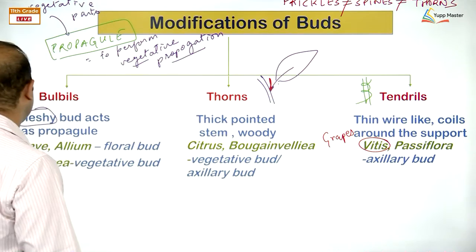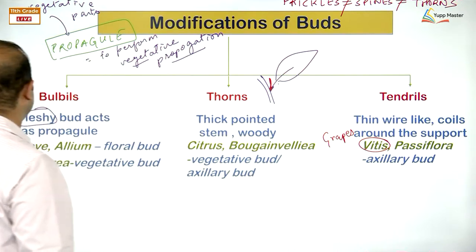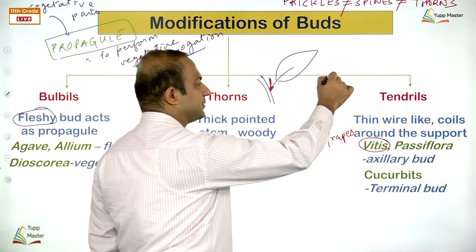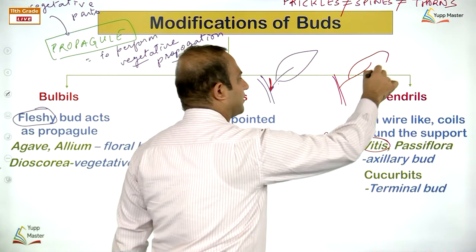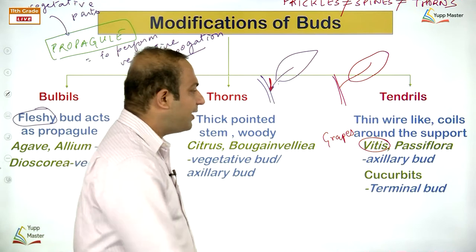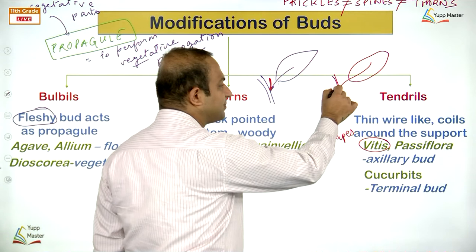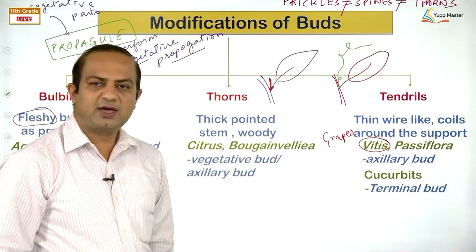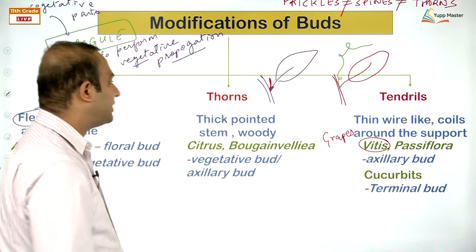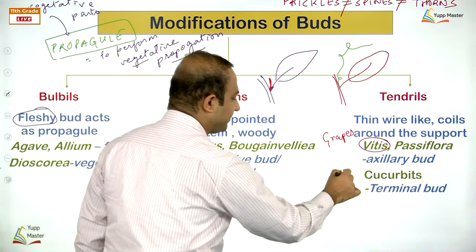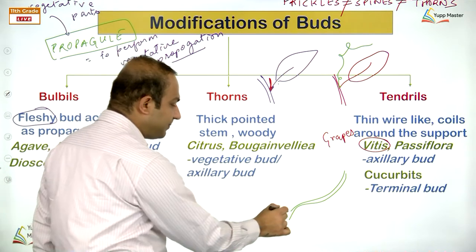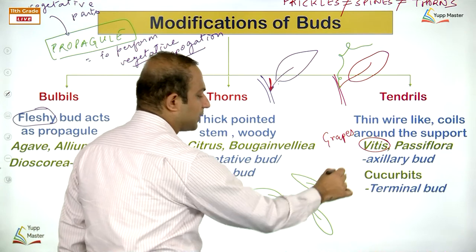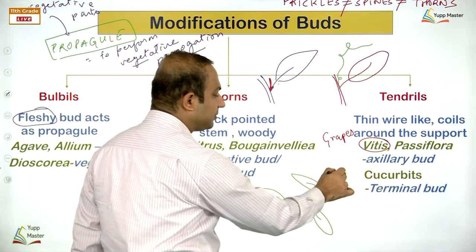The next structure appears to be a stem but is not — it is called a scape or false stem. In banana, what people call the banana tree has no true stem. The green structure on spring onion also appears to be stem but it is not — it has no buds, no nodes, and no internodes. It is actually a pseudo or false stem — an aggregation of leaf stalks.